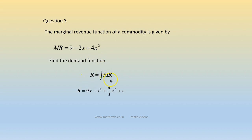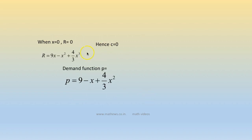Revenue is the integral of the marginal revenue, since marginal revenue is the derivative of total revenue. Integrating gives r = 9x - x² + (4/3)x³. When x = 0, r = 0, so the constant c = 0. Since r = px, the demand function p = r/x = 9 - x + (4/3)x².